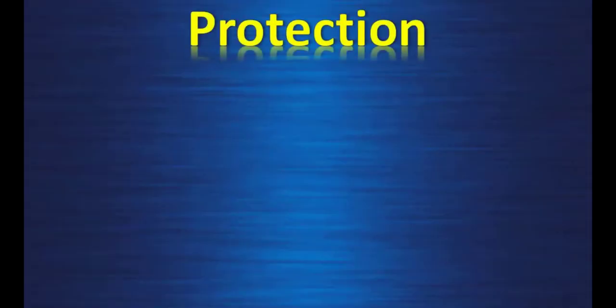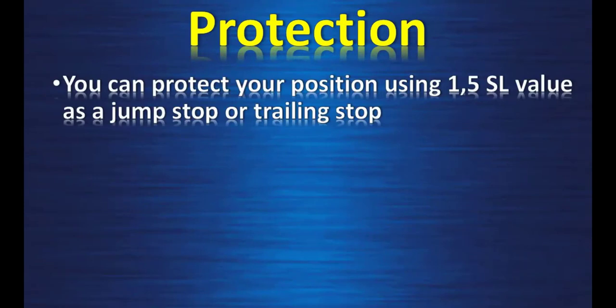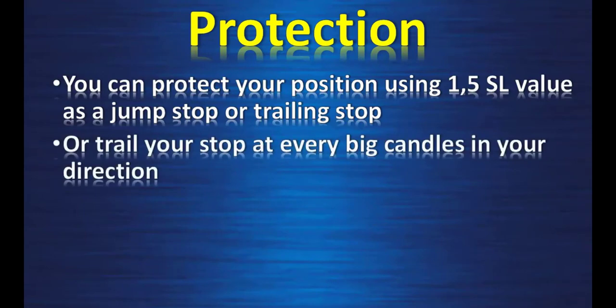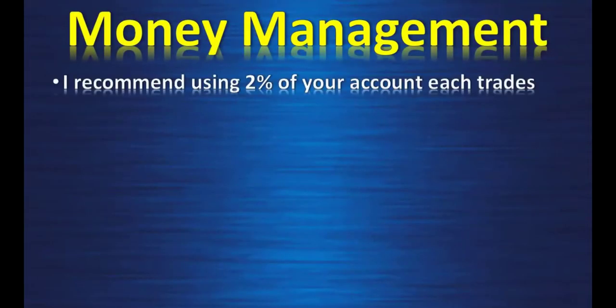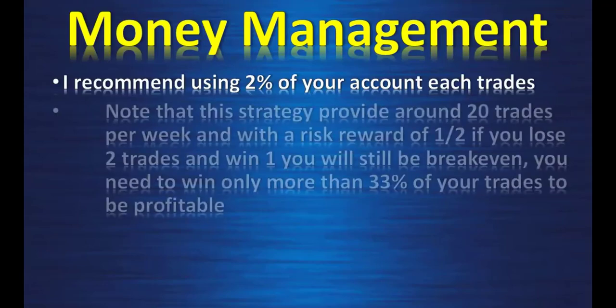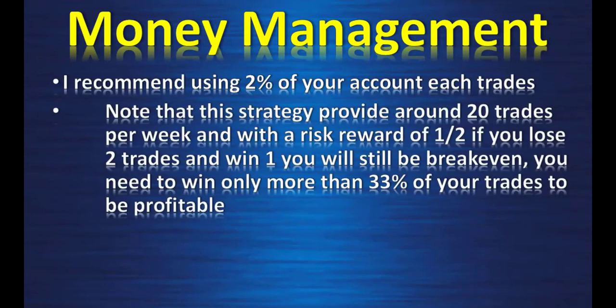Protection: you can protect your position using 1.5 times the stop loss value as a trailing stop. Or you can trail your stop at every big candle on the 4-hour chart in your direction. Money management: I recommend using 2% of your account per trade. Note that this strategy provides around 20 trades per week with a risk-reward of 1:2. If you lose 2 trades and win 1, you will still be breakeven. You need to win only more than 33% of your trades to be profitable.